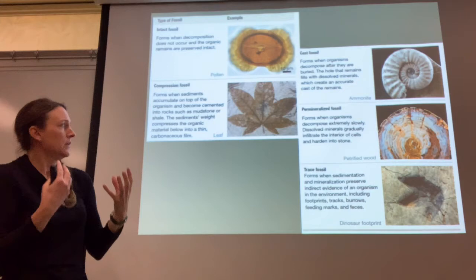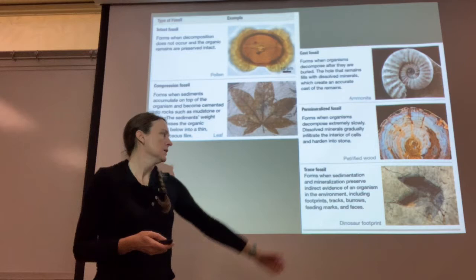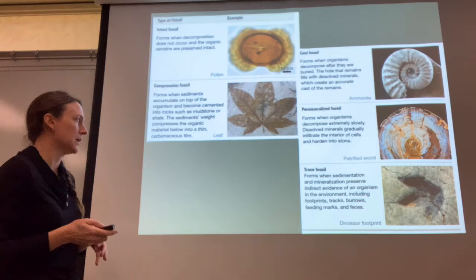Permineralized fossils are things where organisms decompose very slowly, like petrified wood, and their cells are replaced by minerals. And then traces are basically evidence of the organism, like a footprint. Sometimes a worm's tube casing can become a trace fossil.